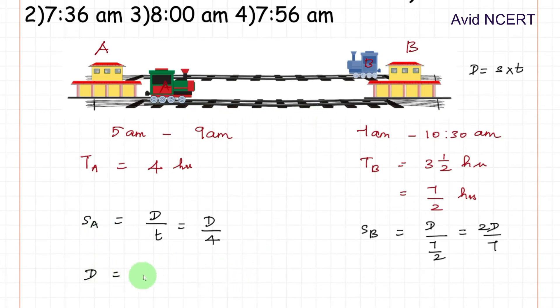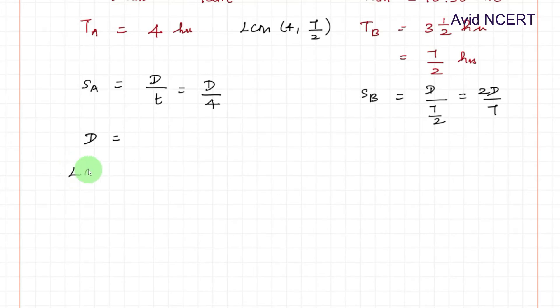Distance can be found by LCM of time between these two times, 4 and 7/2. So LCM of 4 comma 7/2. The first method is cross multiplication. When it is 4 comma 7/2, 4 times 2 is 8. So 8 comma 7, which equals LCM equals 56 here, which means the distance D equals 56.